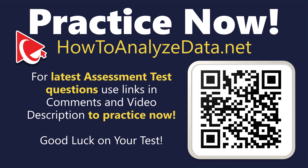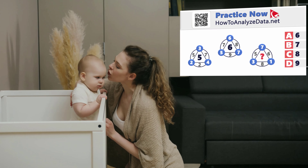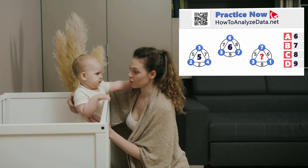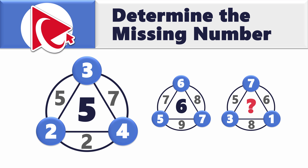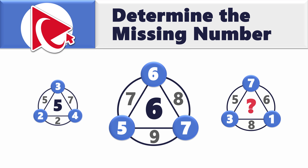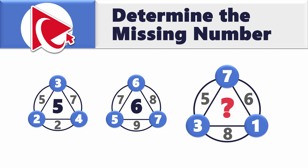This particular one is so easy — it's like trying to convince a toddler that nap time is a good idea. You're presented with three cool-looking shapes, each with circles and triangles. The first shape has inside numbers 5, 7, and 2, outside numbers 2, 3, and 4, and the middle number is 5. The second shape has inside numbers 7, 8, and 9, outside numbers 5, 6, and 7, and the middle number is 6. The third shape has inside numbers 5, 6, and 8, outside numbers 3, 7, and 1, and the middle number is missing.